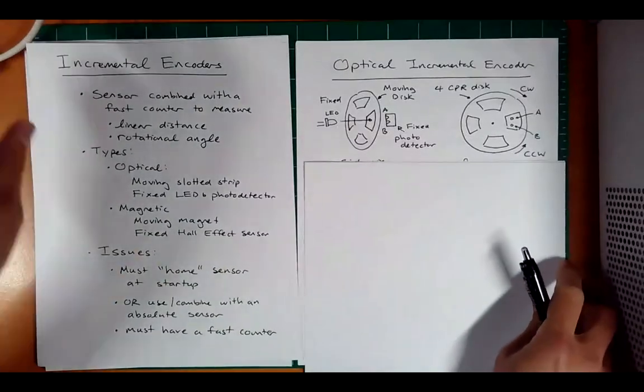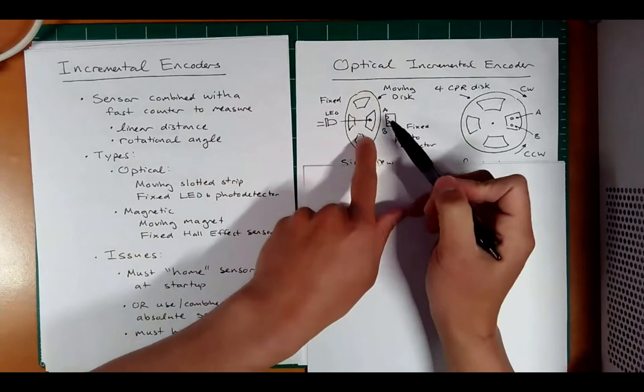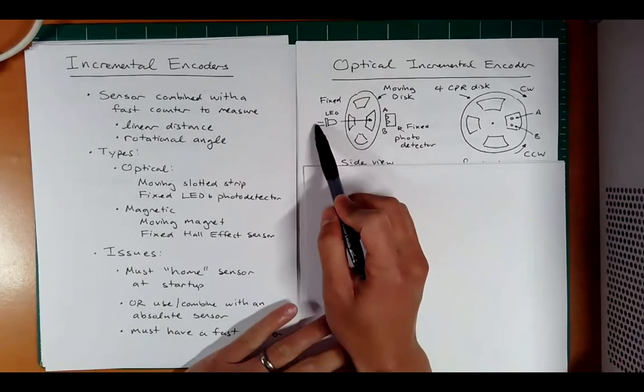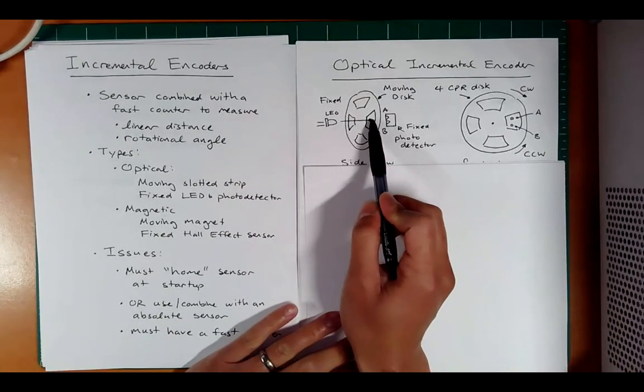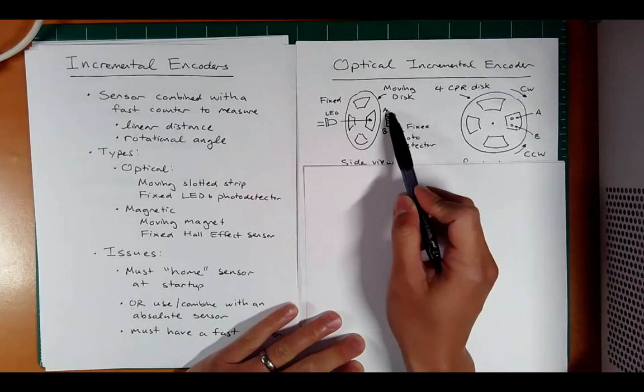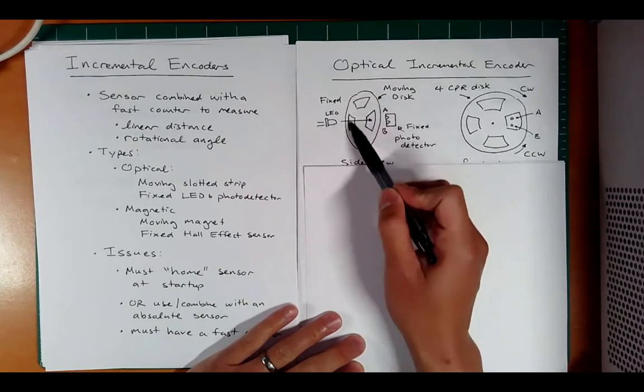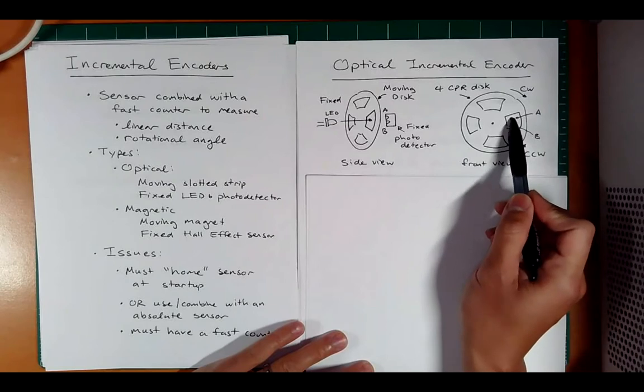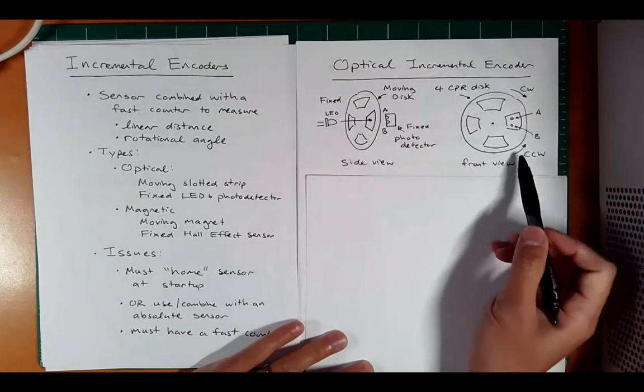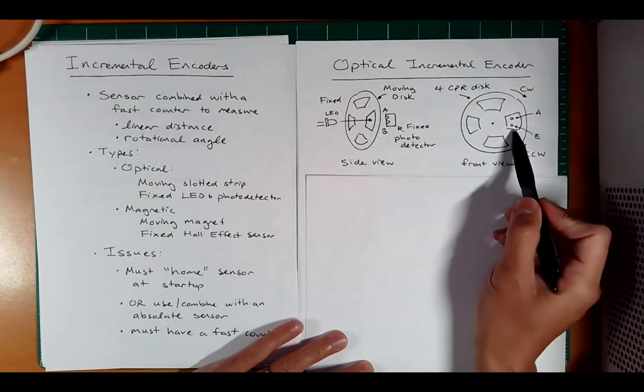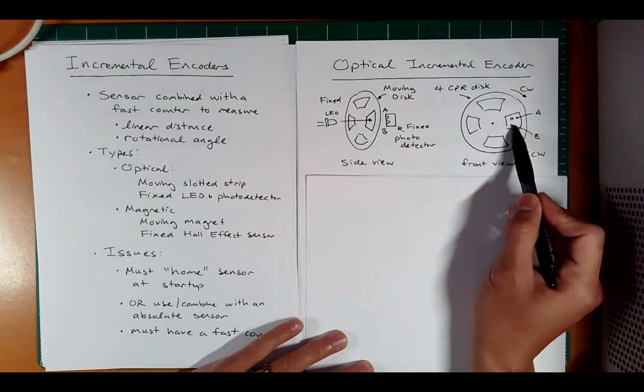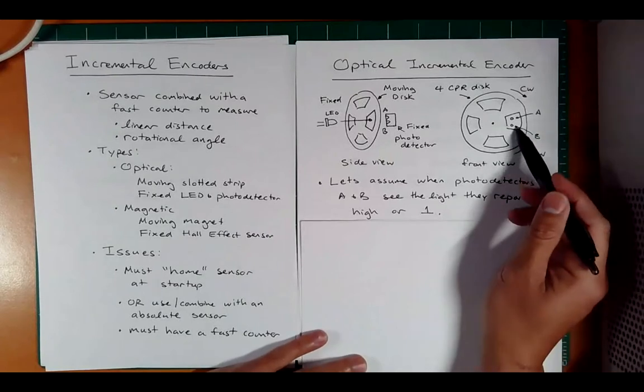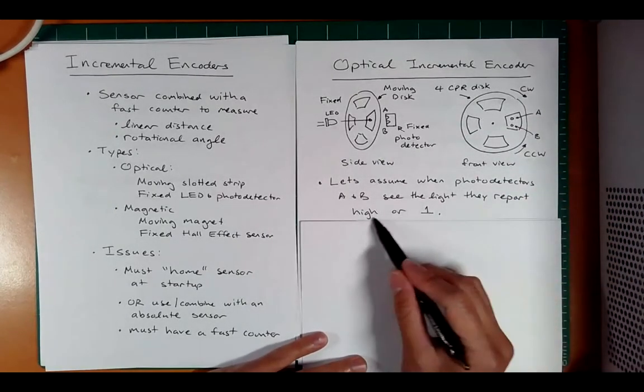So let's look at a kind of a simple version. Imagine you have your moving disk, and you have clear and opaque sections. In this case, we'll have four. And look at this. We have an LED here, and it can shine through, and you have a photodetector, and we have two, actually. And this is fixed. The disk can rotate and move. And so this is a side view and a front view. So you can imagine you have the window here. The photodetector can see the LED shining through, but when I rotate, let's say, either clockwise or counterclockwise, it's going to block the LED, and then this picks up either one or zero, depending on if it sees the LED or not.